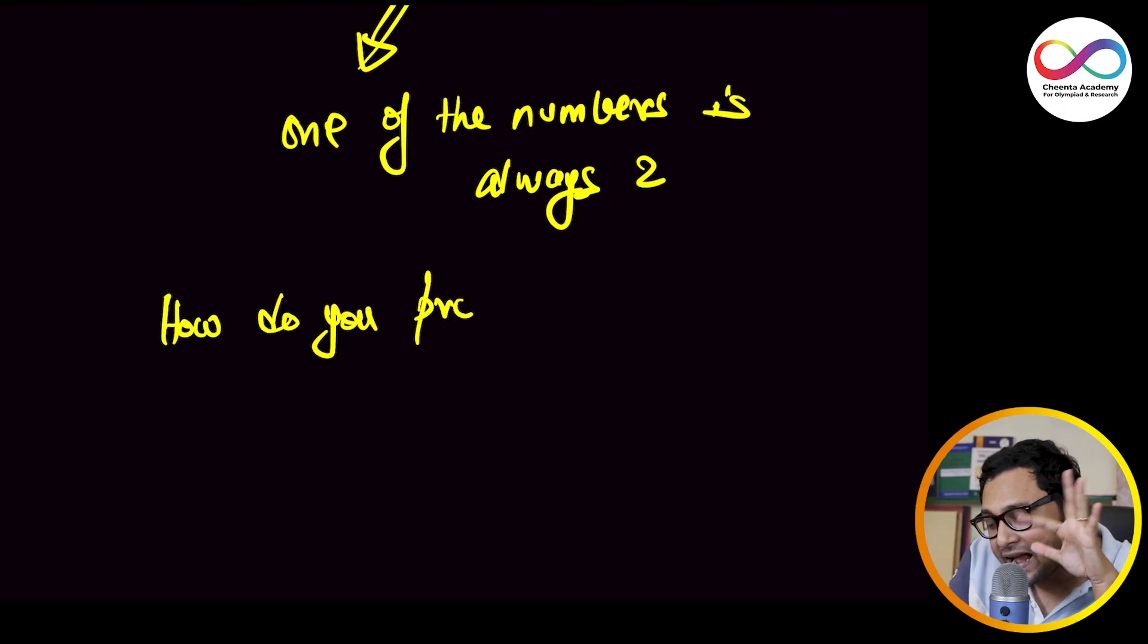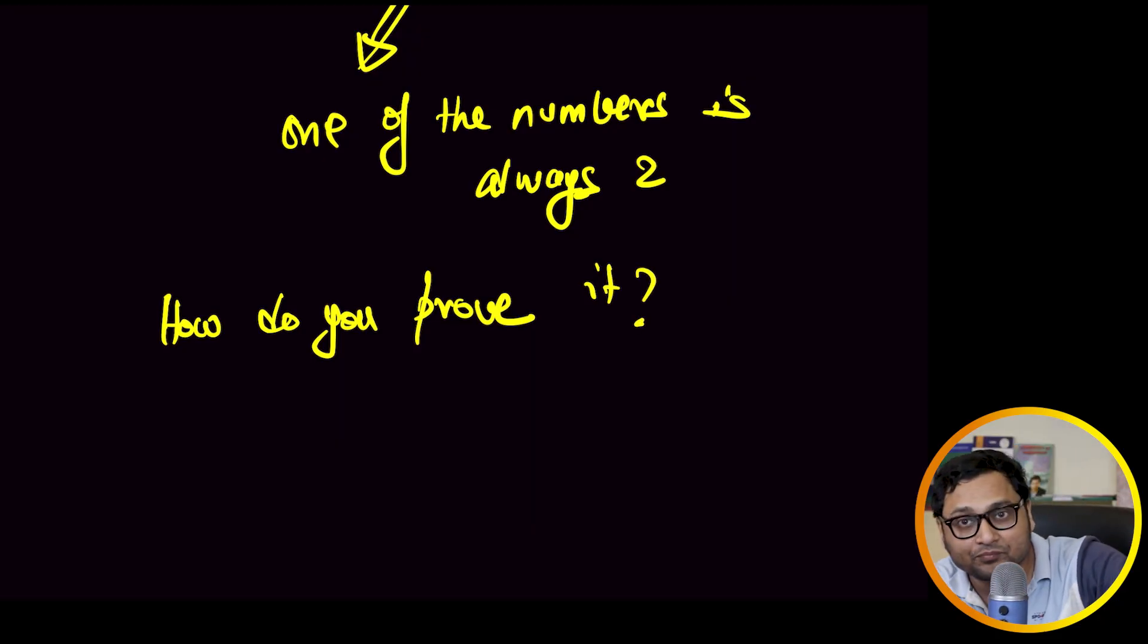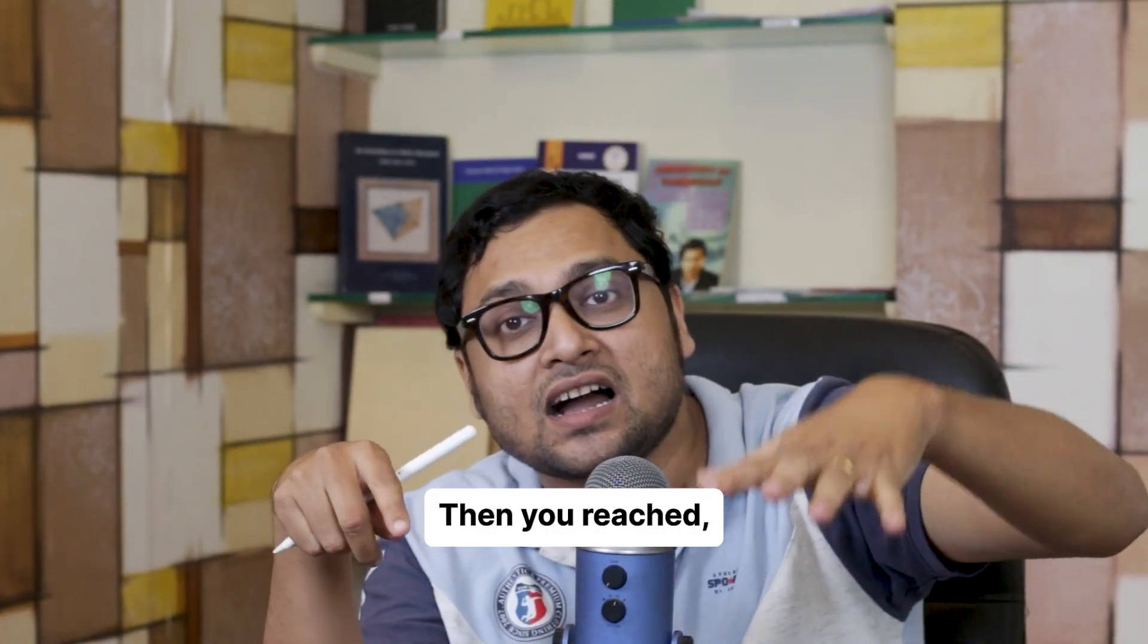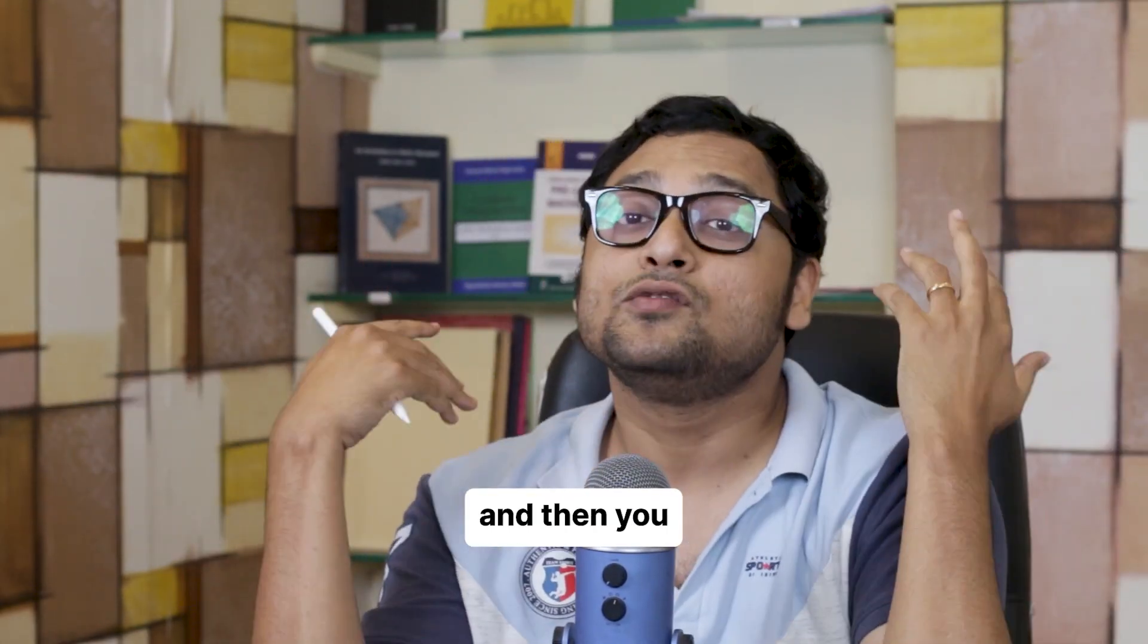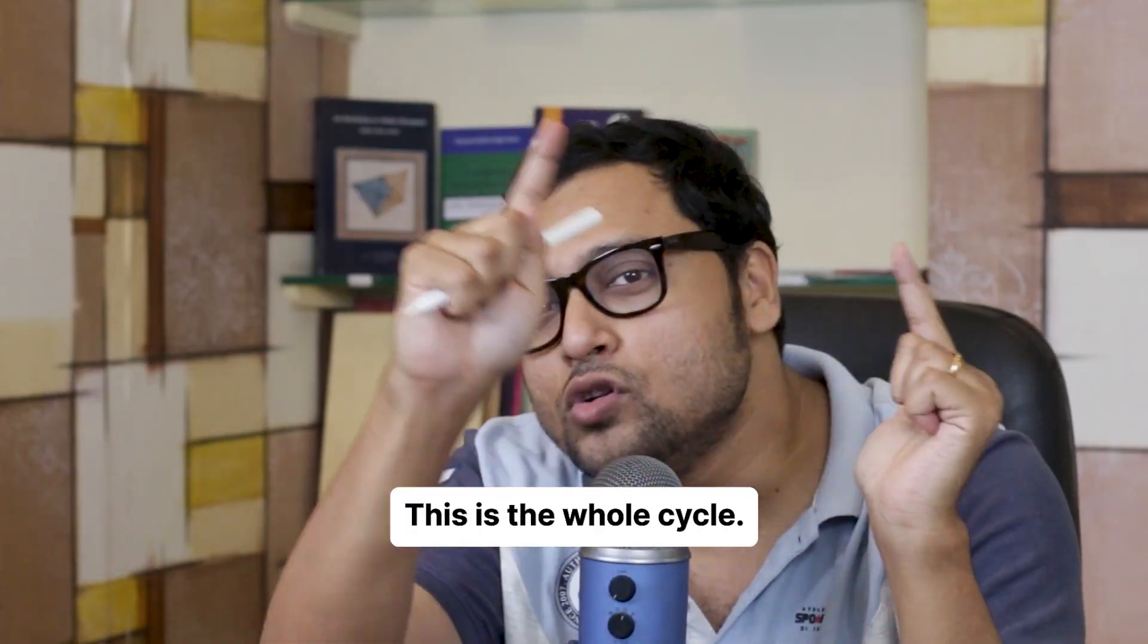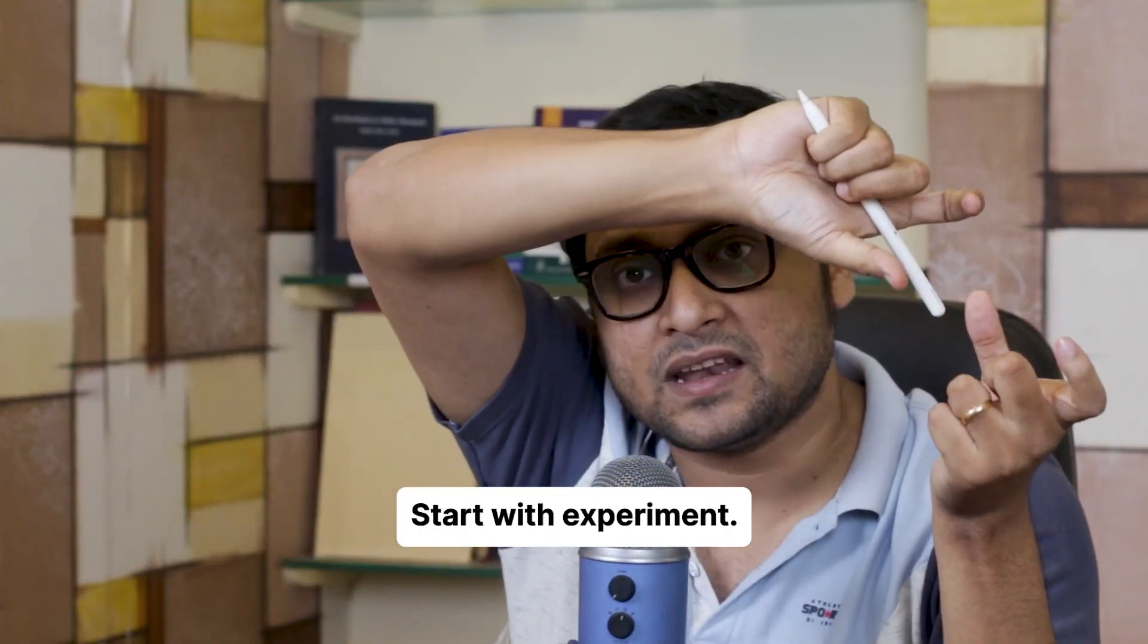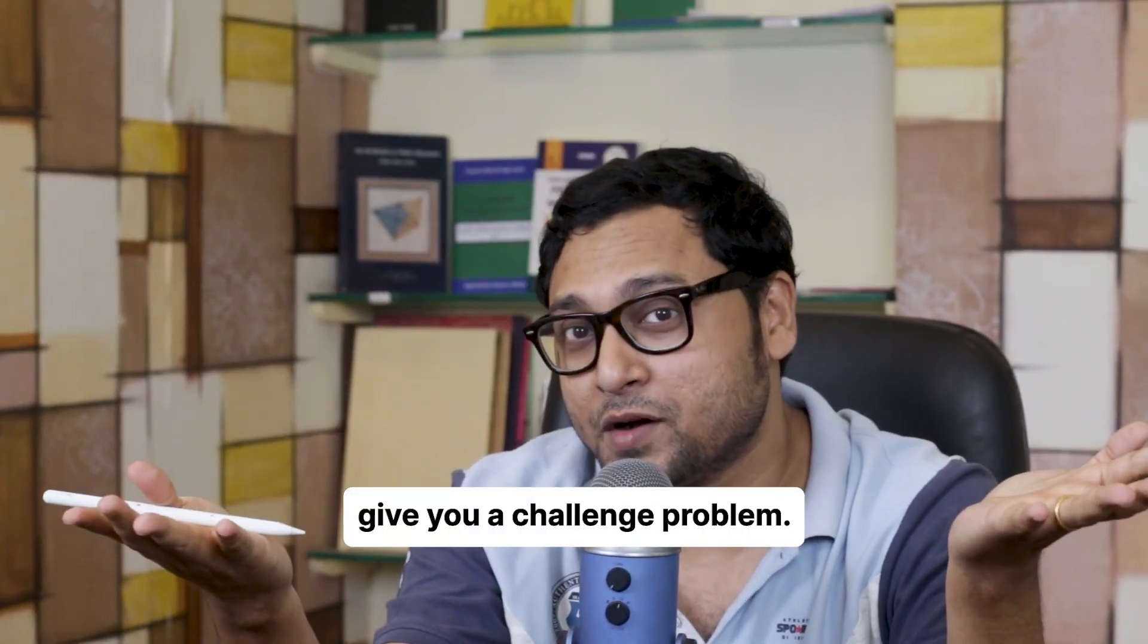So you see what just happened. You did examples or experiments with a certain pattern. Then you reach sort of a generalization. One of them has to be two. And then you sort of construct a problem in number theory. And then you try to prove it. This is the whole cycle. Start with experiment. Reach a hypothesis. Try to prove it. I will give you a challenge problem.